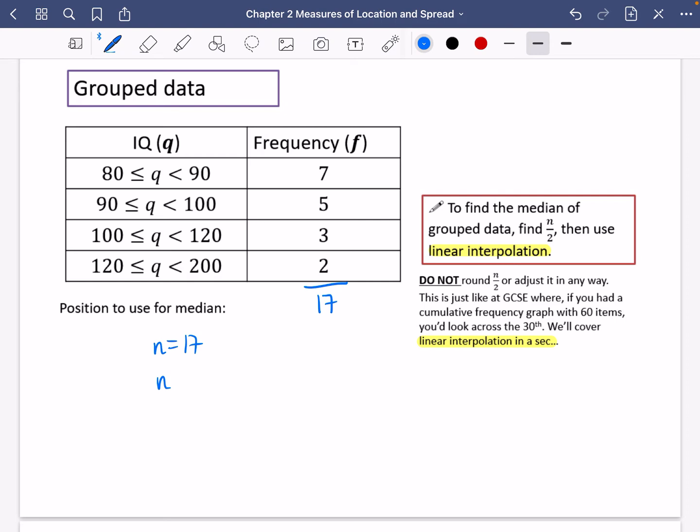So n is equal to 17. So the position that I will use, the median position that I'm going to use is going to be n divided by two, which is 17 over two, which is the 8.5 item. And then what we will do is we will use something called linear interpolation in just a second.